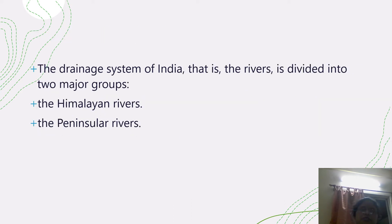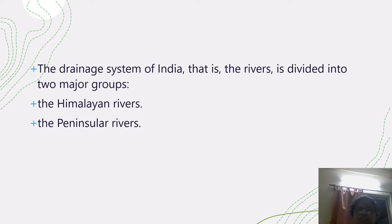The drainage systems of India are divided into two major groups: the Himalayan rivers and the peninsular rivers. In the next slides, we will see some pictures on the map. I have downloaded these pictures from Google, and this picture is very good for understanding the division.